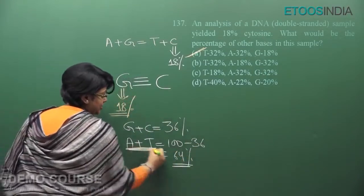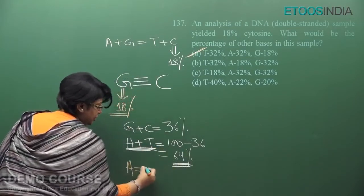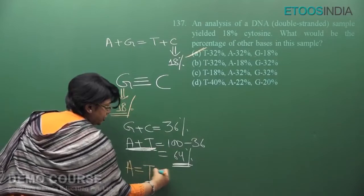A plus T is 64%. That means A will be how much? 32%. And T will also be how much? 32%.